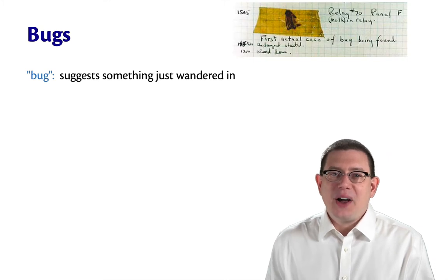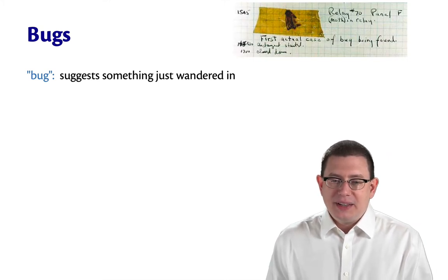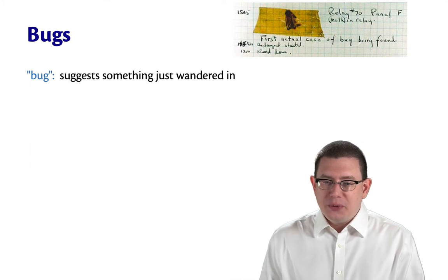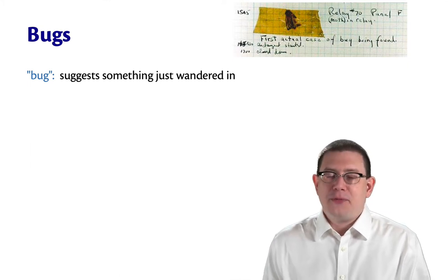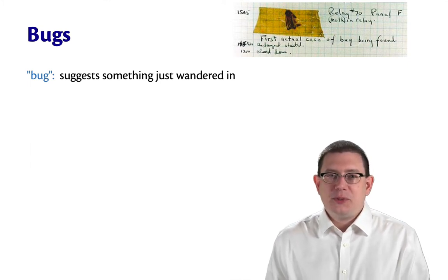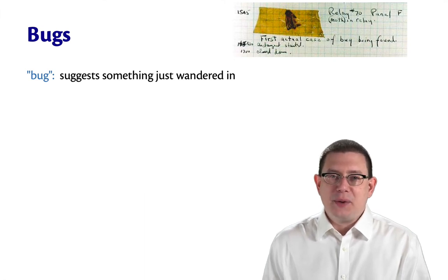Here's a picture of the first bug found by Grace Hopper. It had flown into relay number 70 panel F and gotten trapped there. This was the first actual case of a bug being found in a computer.